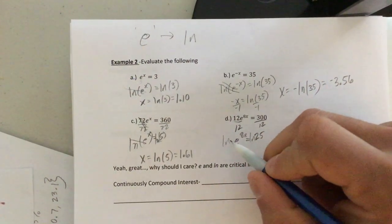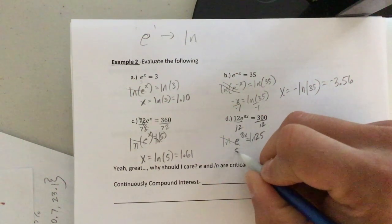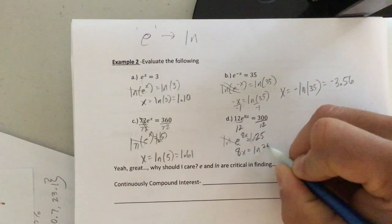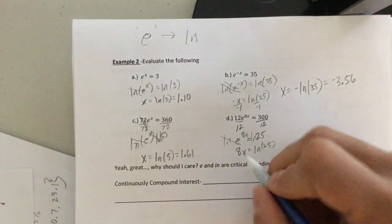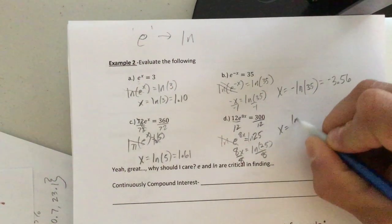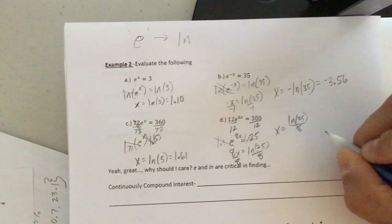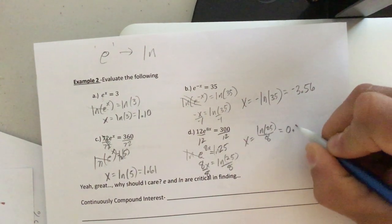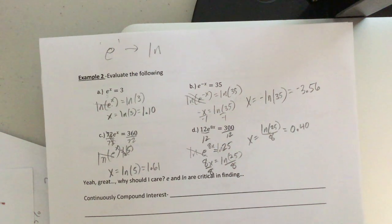When we do, the natural log and the E, they cancel. Once again, they're inverses. So we're left with 8X equals the natural log of 25. But we don't want 8X. We want to solve for X. So divide both sides by 8. X equals the natural log of 25, all of which divided by 8. When you type it in, about 0.40. Okay.